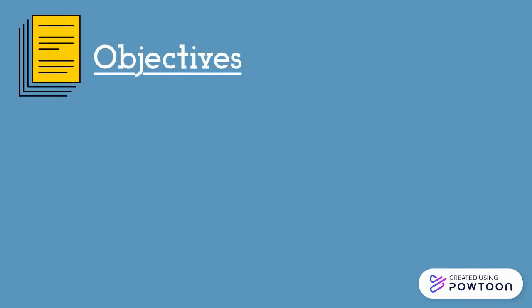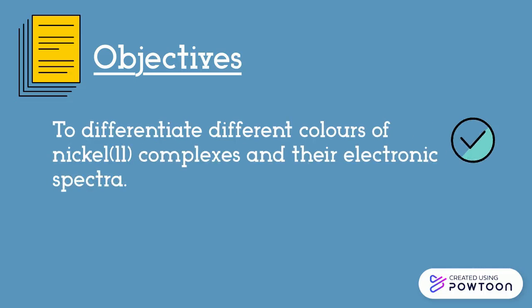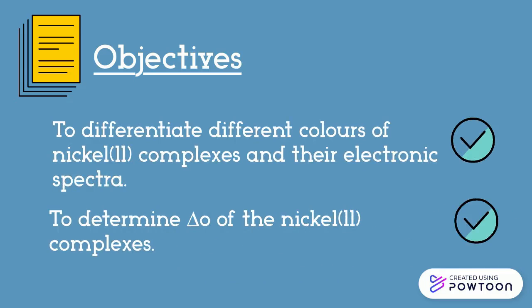There are two objectives to be achieved in this experiment. The first one is to differentiate different colours of nickel(II) complexes and their electronic spectra. And the other one is to determine the delta-octahedral of the nickel(II) complexes.